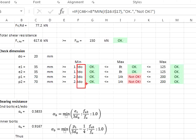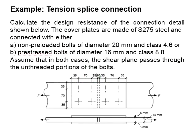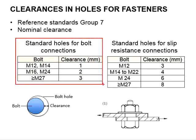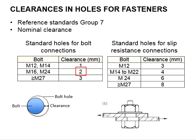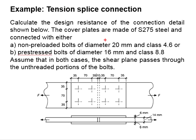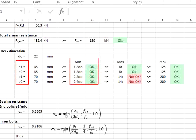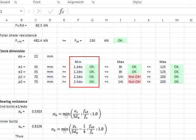To obtain the diameter of the bolt hole, we need to know the size of the bolt. The bolt size is 20 mm and it is a non-preloaded bolt. Checking the clearance for a standard bolt, the clearance will be equal to 2 mm. Therefore, the size of the bolt hole will be 20 mm plus 2 mm clearance, which equals 22 mm. Taking the bolt hole diameter as 22 mm, E1, E2, P1, and P2 are checked against minimum sizes of 1.2, 2.2, and 2.4 times D0. All proposed dimensions satisfy the minimum requirements.